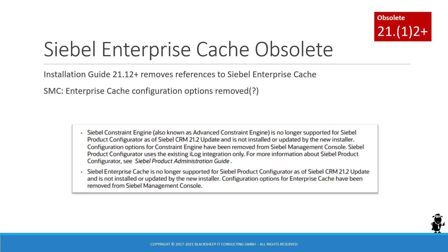As was announced one year ago in 2012, the advanced constraint engine or the Siebel constraint engine was no longer supported, with that date now declared as 21.2 in Bookshelf. The advanced constraint engine for the product configurator was the only real use case for the enterprise cache server and client that you could configure. As of 21.12, in the installation guide there is a note that Siebel Enterprise Cache is no longer supported for the product configurator, and references to the product have been removed from the Siebel Bookshelf guide.